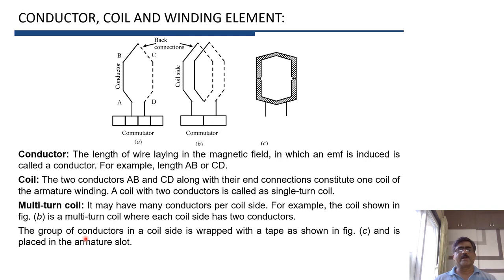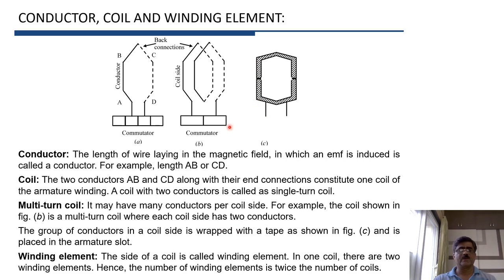The group of conductors in a coil side — there can be many conductors in one coil side, and all these conductors are wrapped with a tape as shown in figure C. This forms one coil side and it is then placed in the armature slot. The side of a coil is called a winding element. In every coil, there are two winding elements.